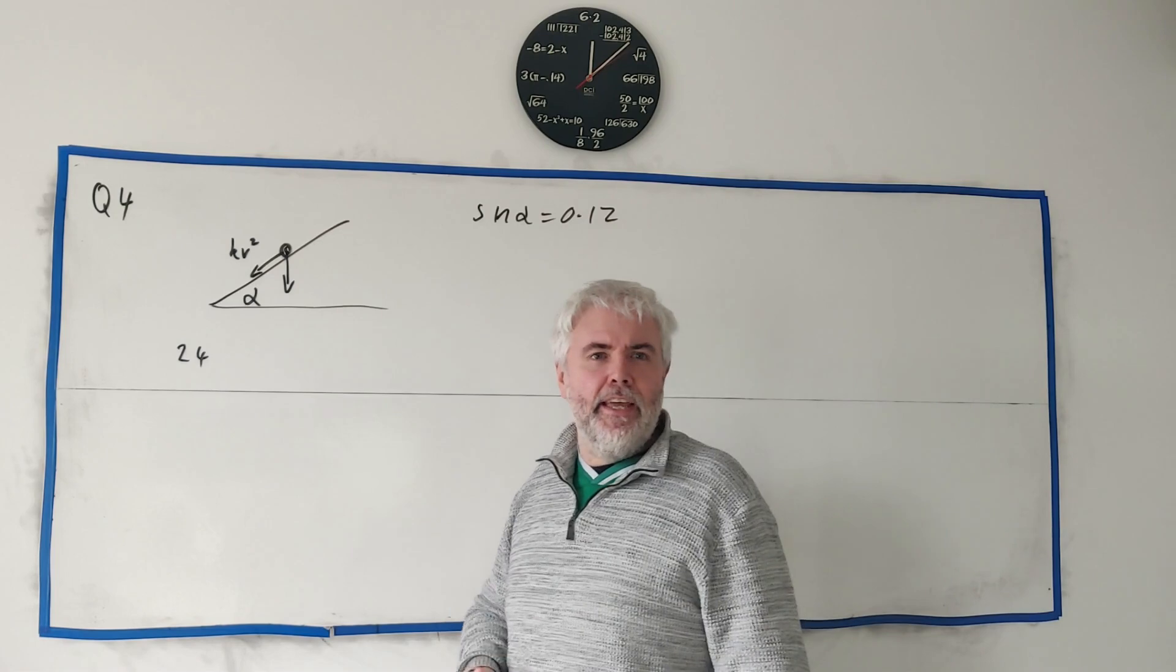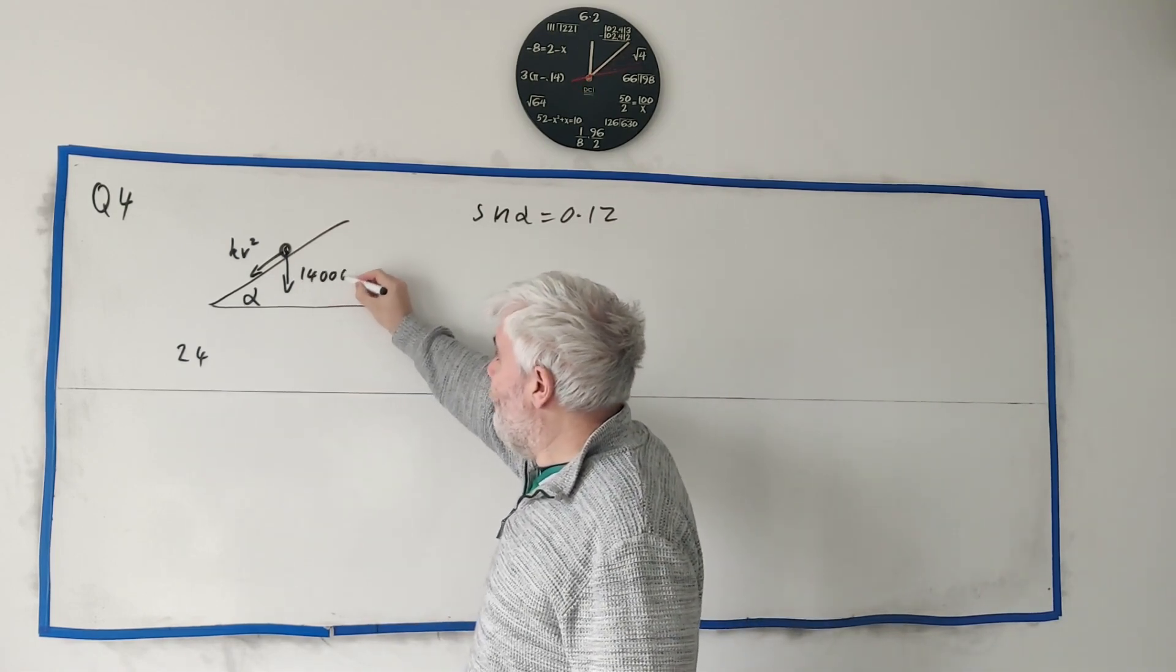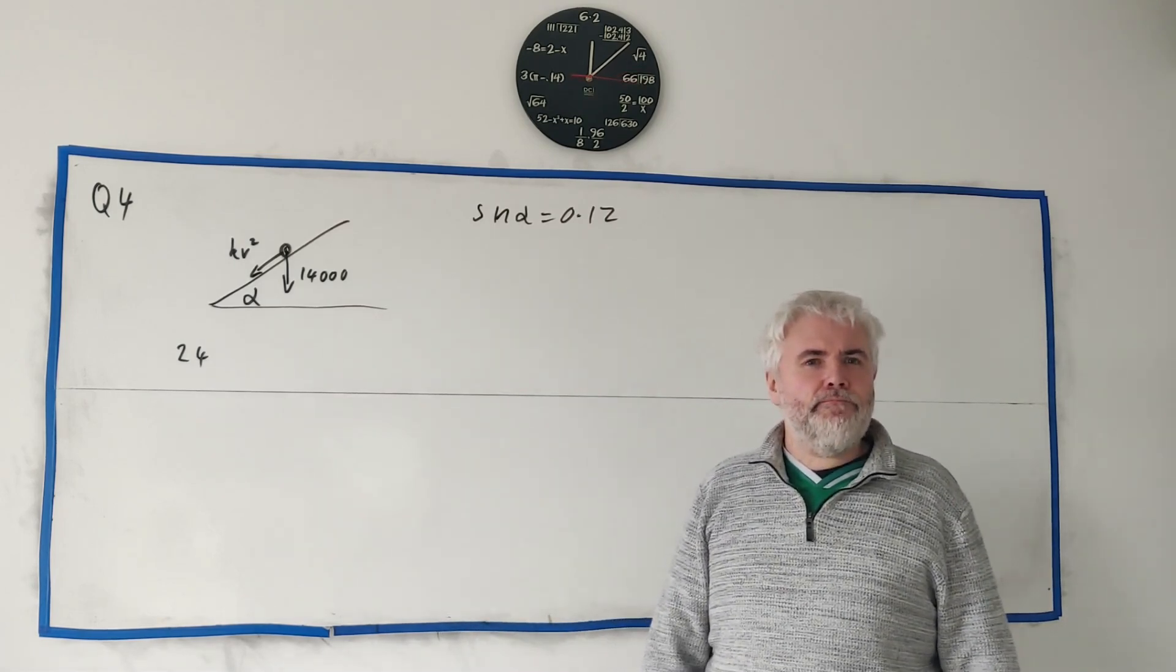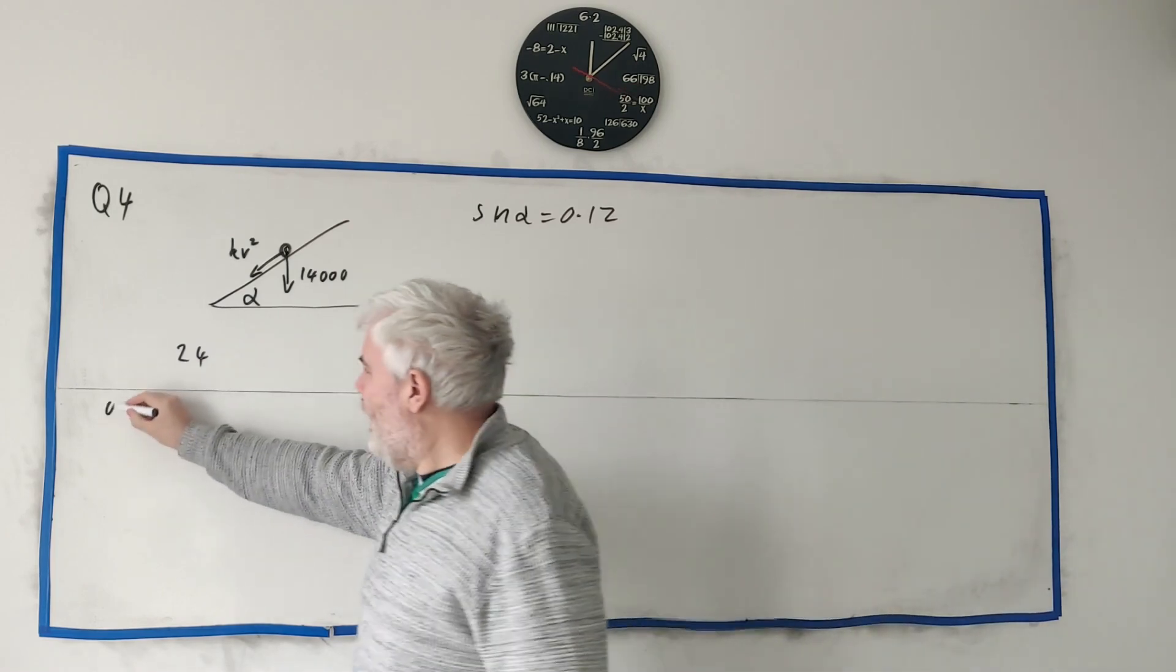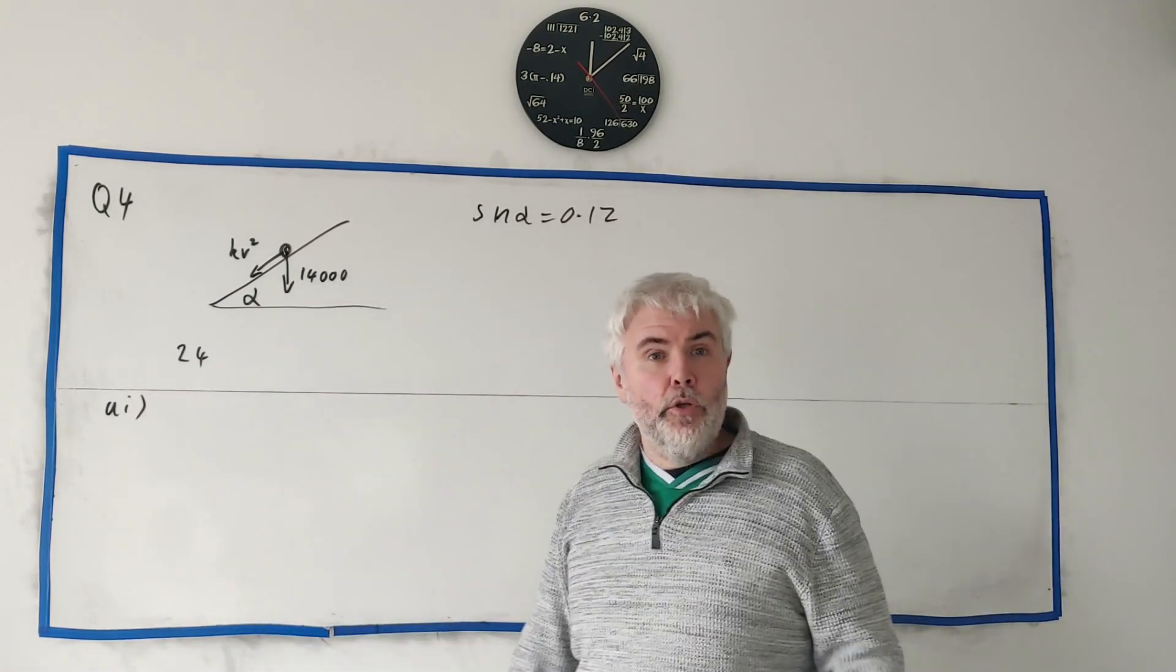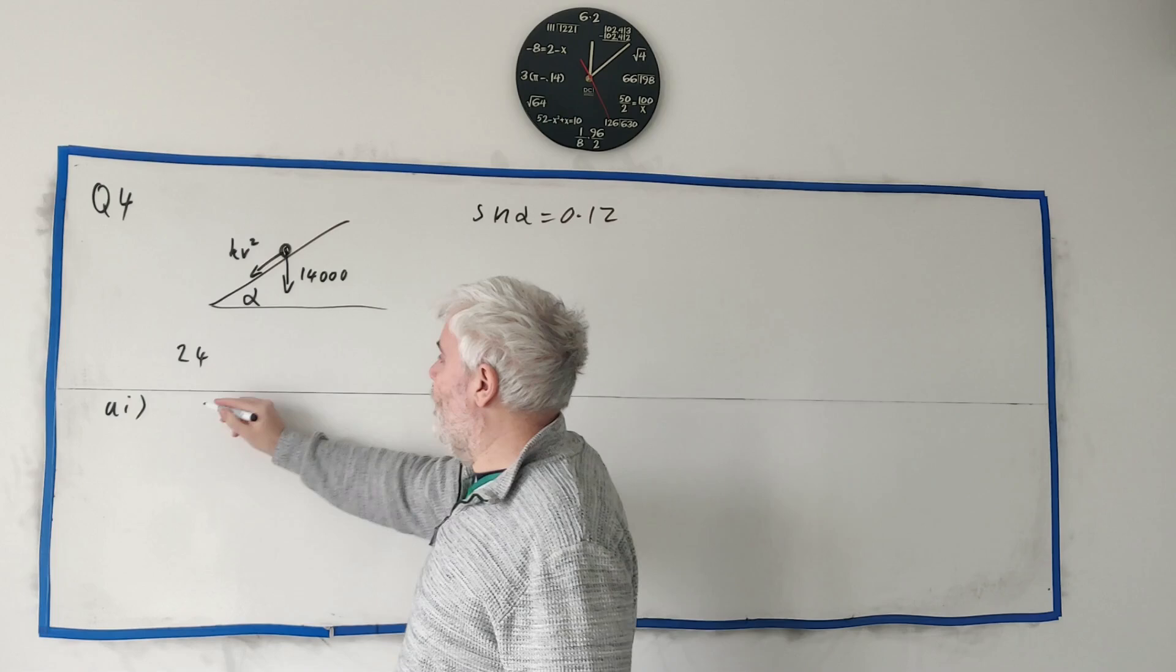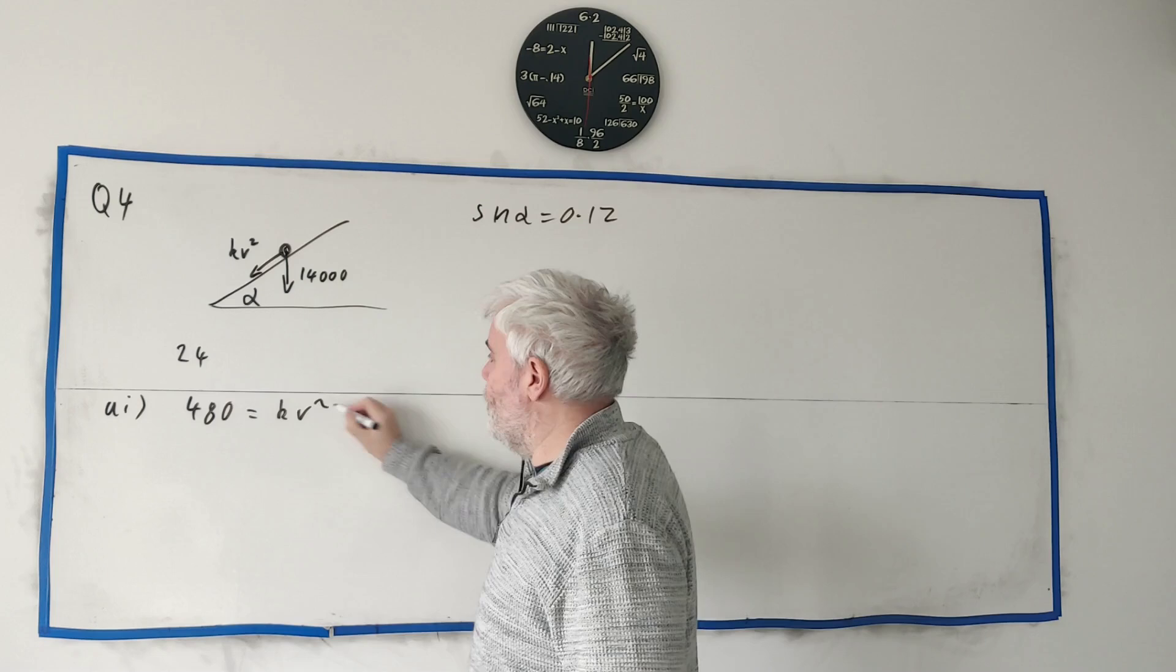The force down, what's the weight? It's 1,400. So the force down would be 14,000 newtons. And most of that's not important for Part A. Part A simply asks us to find K. But they tell us that this force here equals 480. So they just tell us 480 equals KV squared.